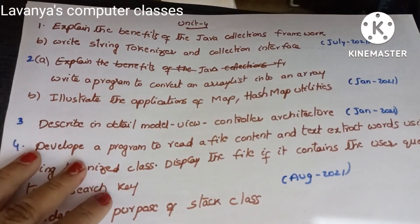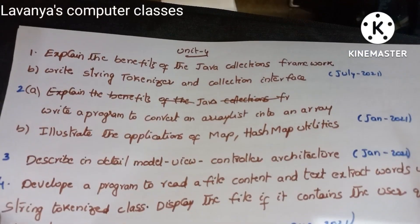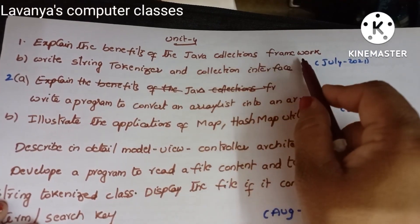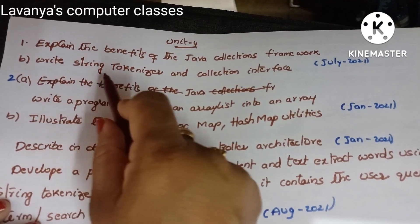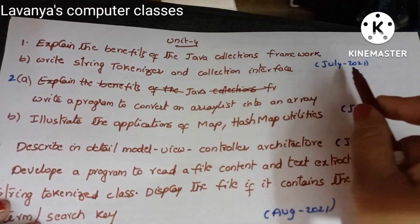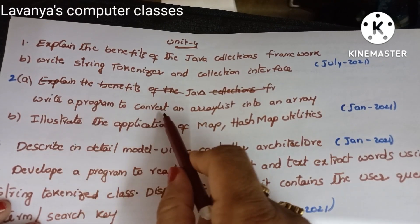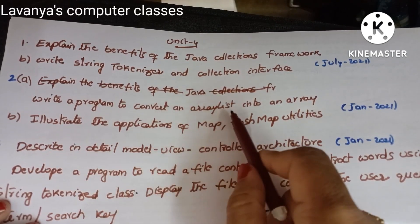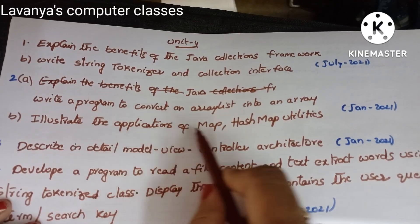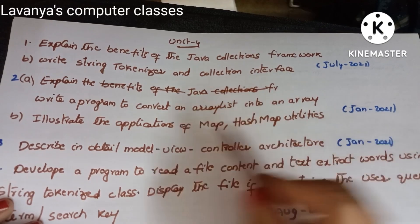Now unit four questions: 'Explain the benefits of the Java Collections Framework. Write about StringTokenizer and the Collection interface' — July 2021. 'Write a program to convert an ArrayList into an array and illustrate the applications of Map and HashMap utilities' — July 2021.